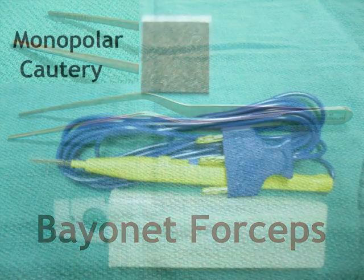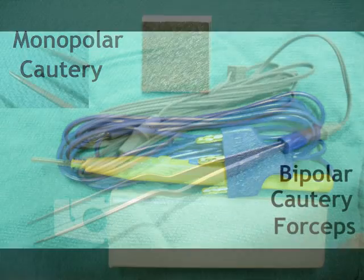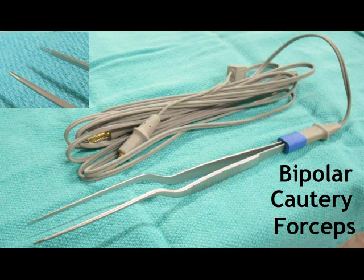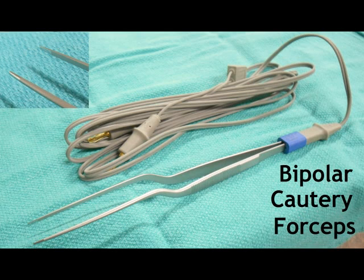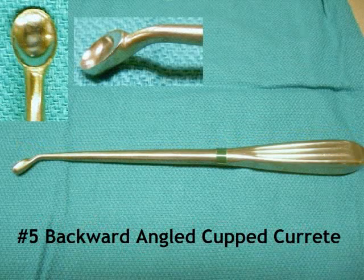The cauteries come as monopolar and bipolar. The bipolar coagulates between the blades. Laurie, show us what you have for curettes. They come in different sizes. The most commonly used sizes are the number three cup curette and the number five cup curette.